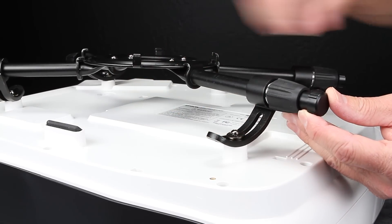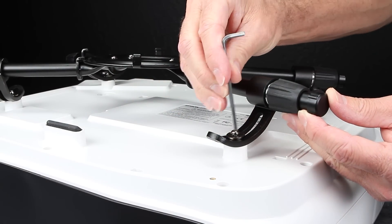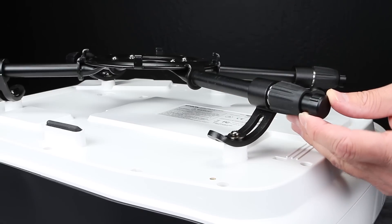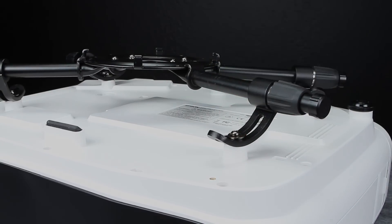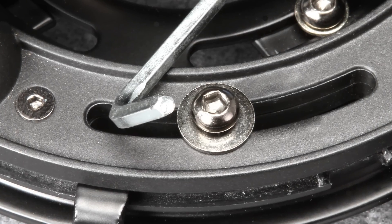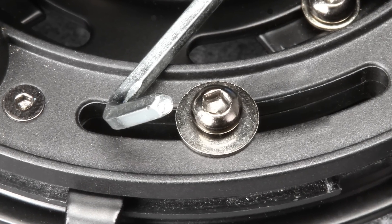The exclusive J-hook bracket allows for level mounting of projectors with uneven or contoured mounting surfaces. All exposed hardware has a unique penta shape for added security.